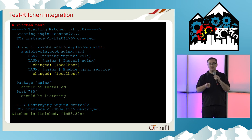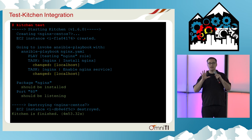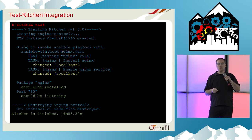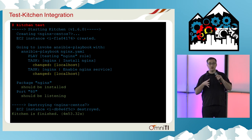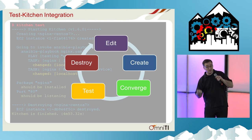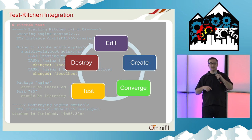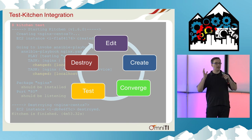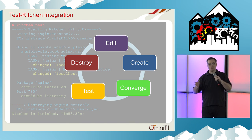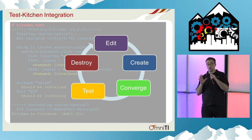Another piece I wanted to demo here is running it with Test Kitchen. This is an example of using Ansible DK with Test Kitchen to create a temporary node, run Ansible against it, run server spec tests on it, and then destroy it once the test passed. You end up in this virtuous cycle of editing, creating, converging, destroying. It's wonderful — it's exactly where you want to be, and you never have to touch a real machine.